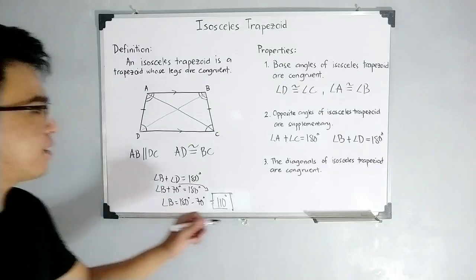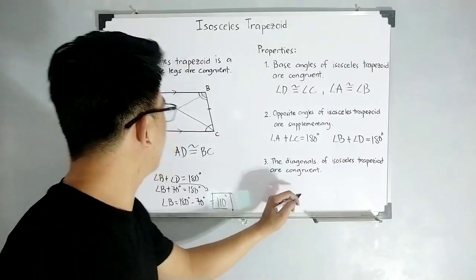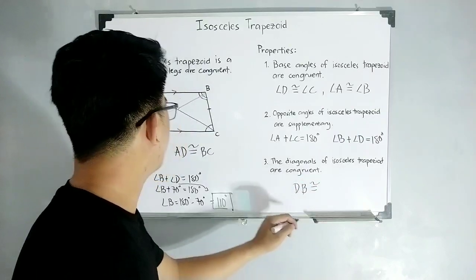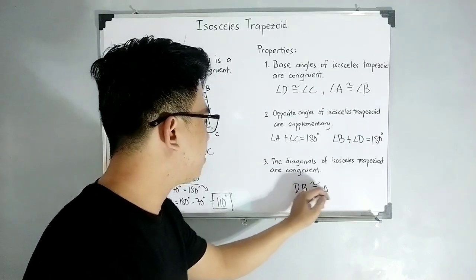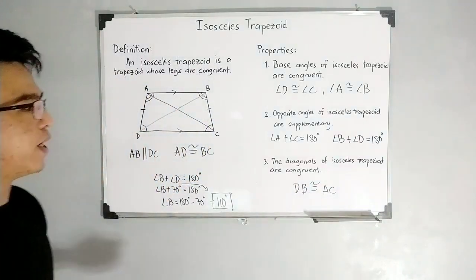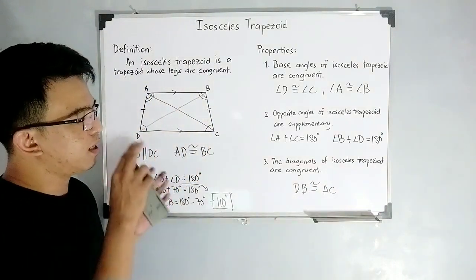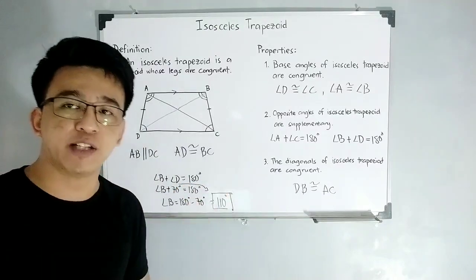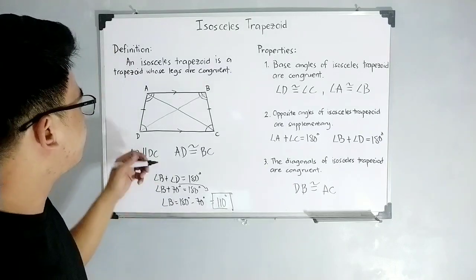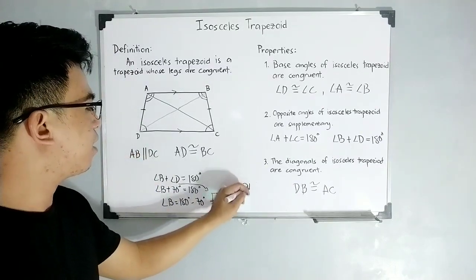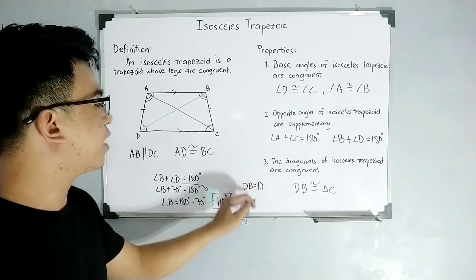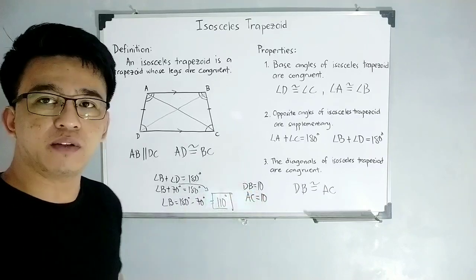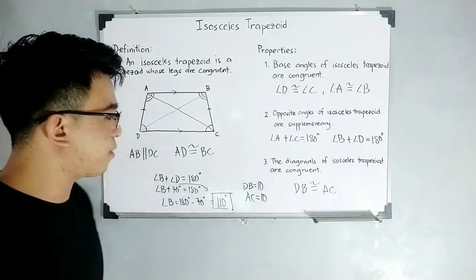Sir, what does this mean? Since they are congruent, since those lines are diagonals of isosceles trapezoid, they have the same length or measurements. So, let's say, for example, your DB is equivalent to 10 units. Sir, how about AC? Since they are congruent, this one is also 10 units. That's it for property number 3.